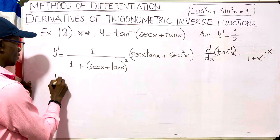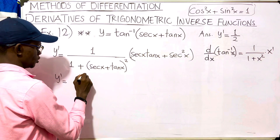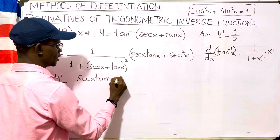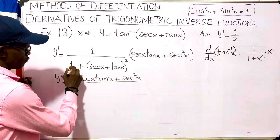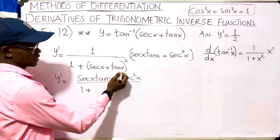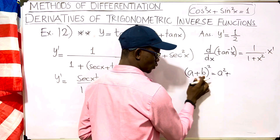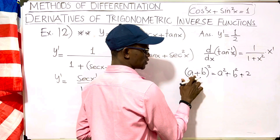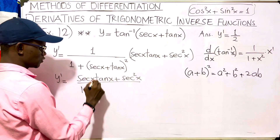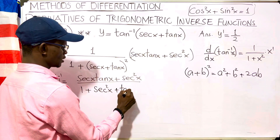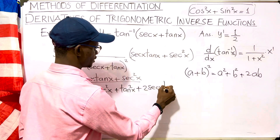Now we simplify. We have y prime equals secant x tangent x plus secant squared x, all divided by 1 plus the expansion of secant x plus tangent x, all squared. To expand a plus b squared: square the first term, square the second term, and add two times the product of the two terms. So we get secant squared x plus tangent squared x plus two times secant x tangent x in the denominator.